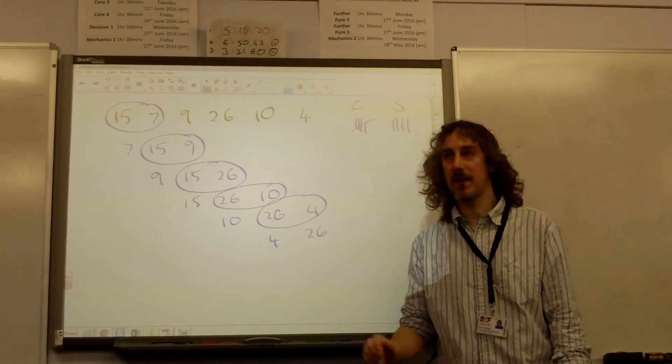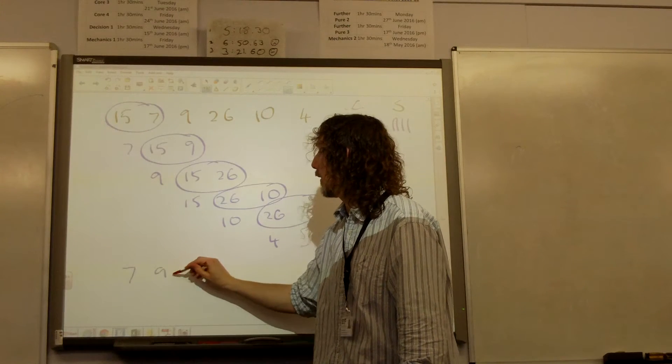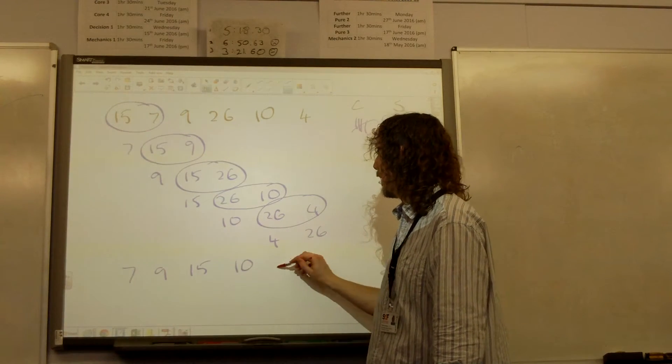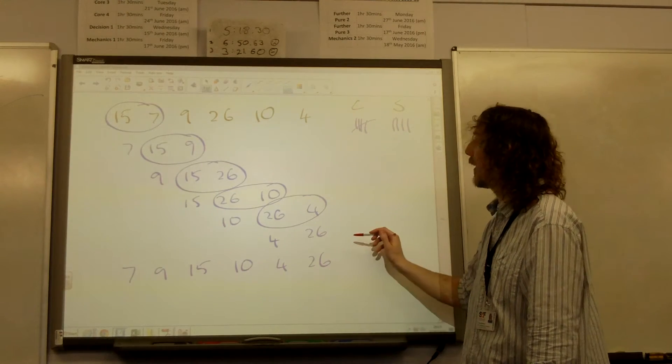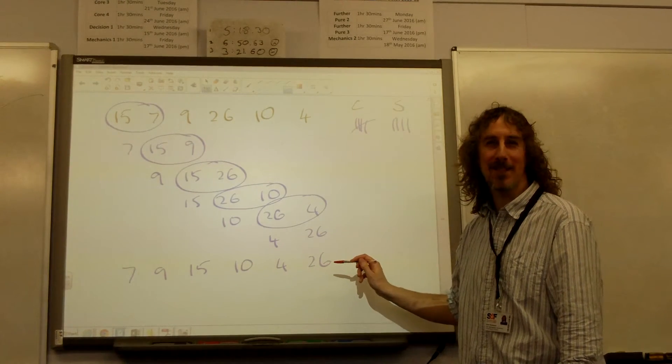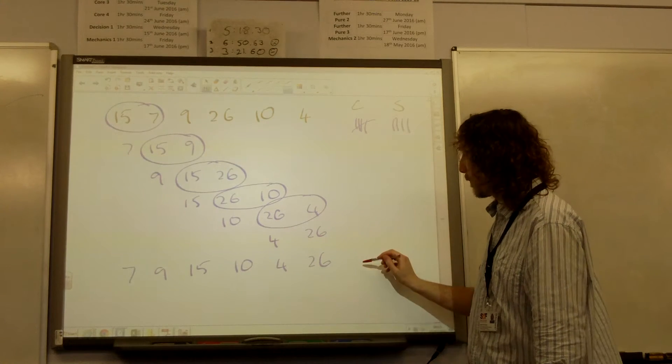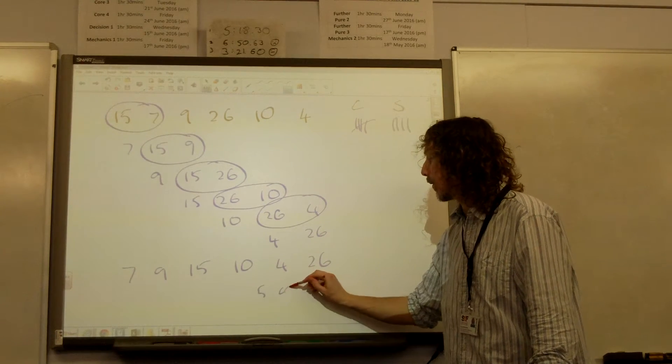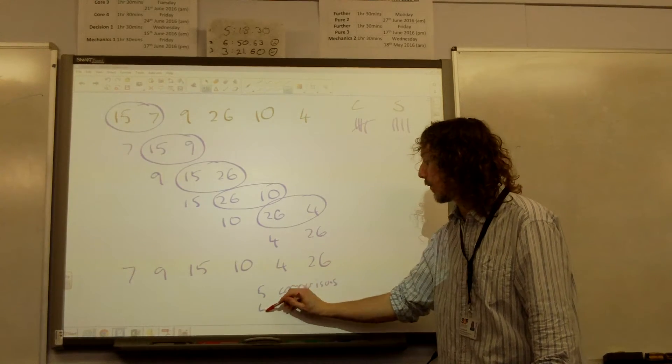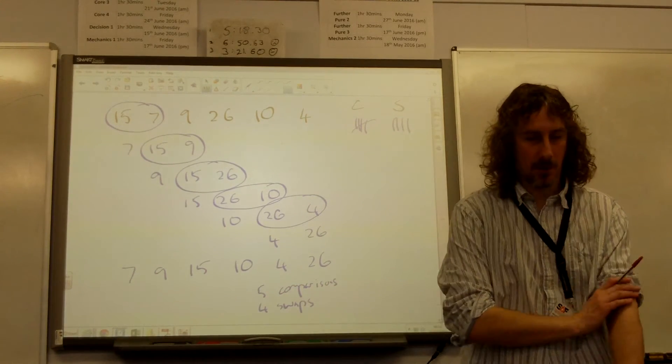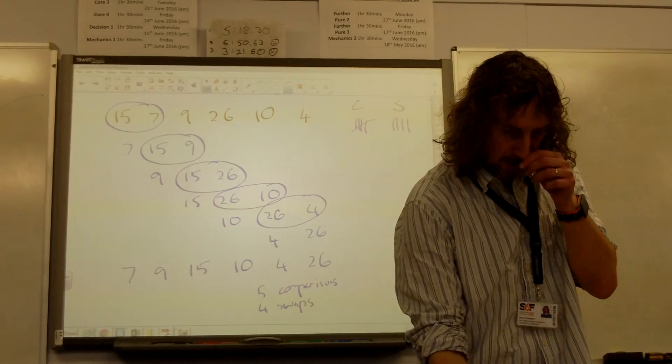The question says write down the list as it is: 7, 9, 15, 10, 4, 26. So we count how many comparisons and swaps? Five comparisons and four swaps. So there we go. That's all the marks for that. That was three marks.